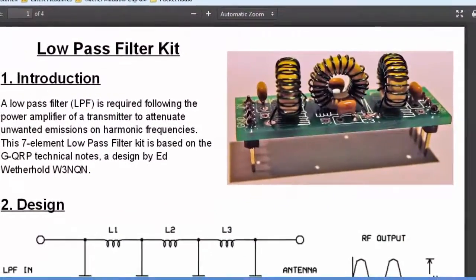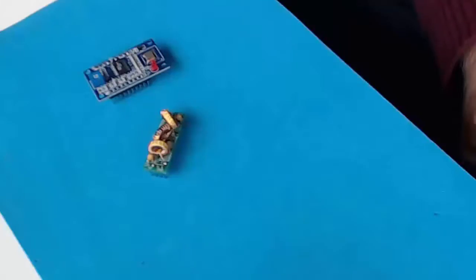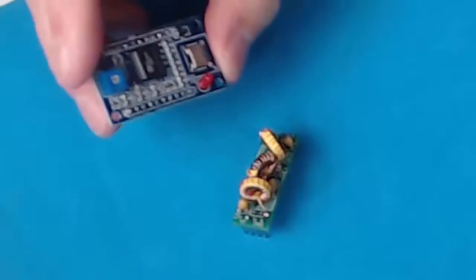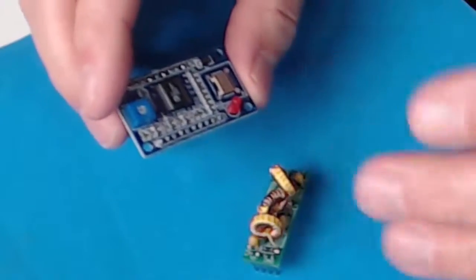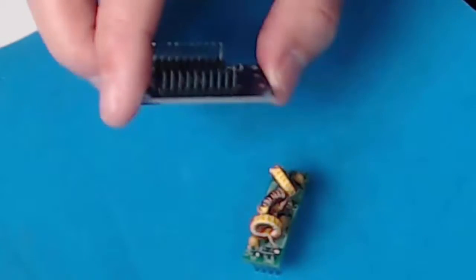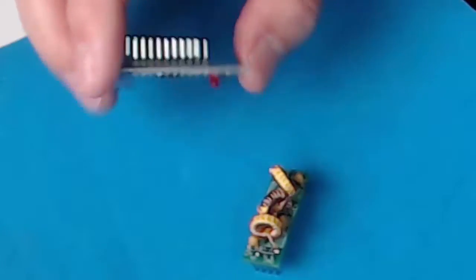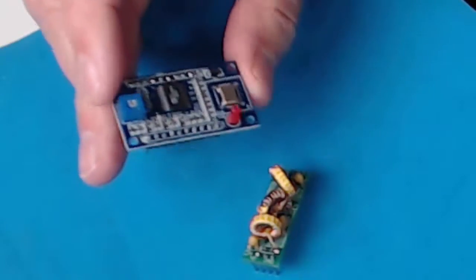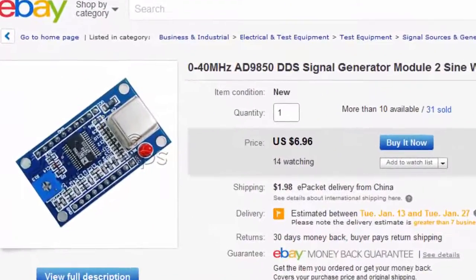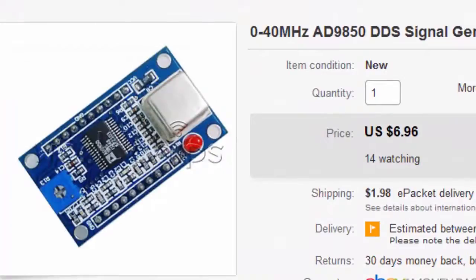So why do we need a low-pass filter? This little plug-in module here will generate the frequency we want our whisper station to transmit on. It plugs into our main board with all these pins on the back side. We'll set our operating frequency with an ordinary serial connection. No matter what kind of oscillator you use, they all have one problem in common. Although they are designed to oscillate at a particular frequency, we always get a little bit more than we asked for.